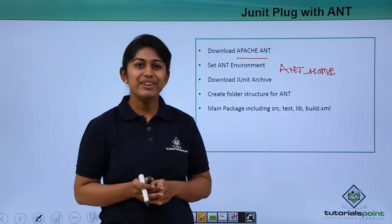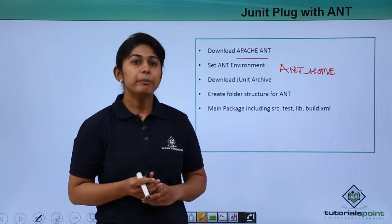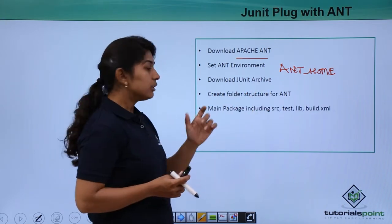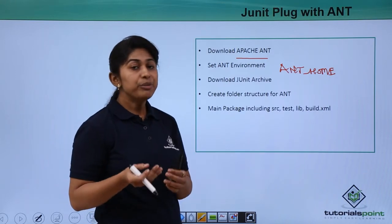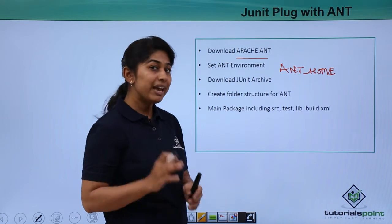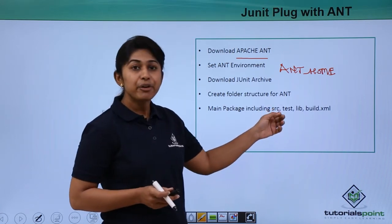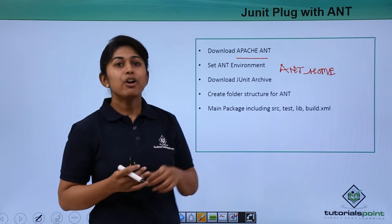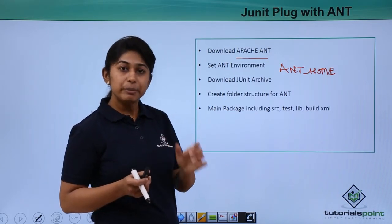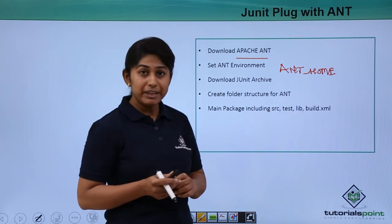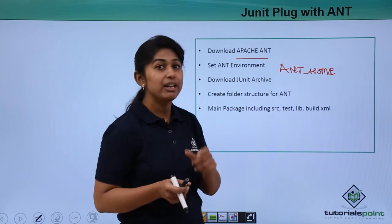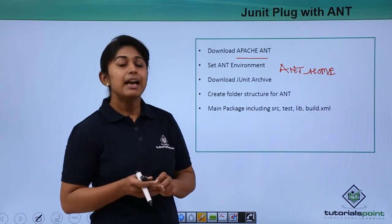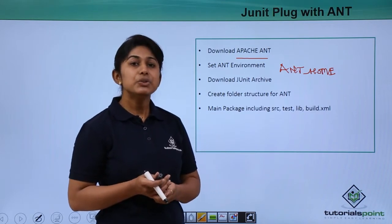The next thing is to download the JUnit archive, which you can download from www.junit.org. After that, you need to create the folder structure for ANT. Whenever you create any program, you need to create one main package containing three folders: SRC, where your class files will reside; test, where your test cases will reside; and a library folder where all your libraries like JUnit.jar will be placed. You also need to create one build.xml file and execute it using ANT commands.